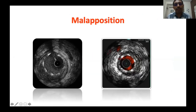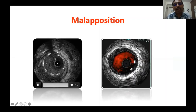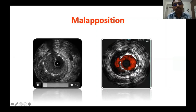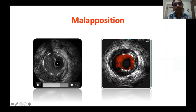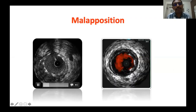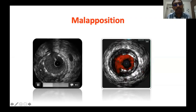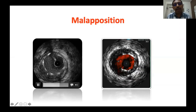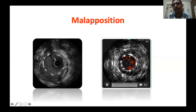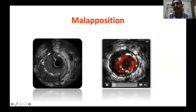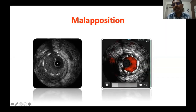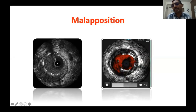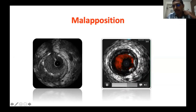Malapposition is lack of contact between stent struts and the vessel wall, with movement of RBCs in between. Here you see stent struts, the intimal surface, and movement of RBCs — the typical appearance of malapposition. With the VOLCANO system there is a special function where you can see Doppler movement outside the stent struts — this function is called ChromaFlo and it exists only with the solid-state system from Philips.